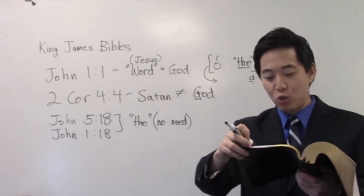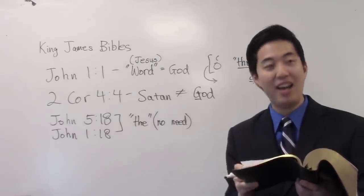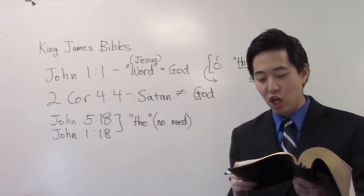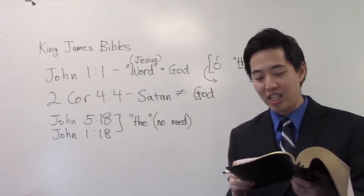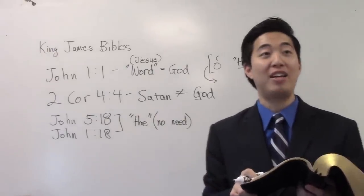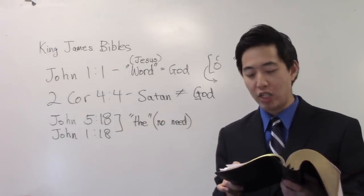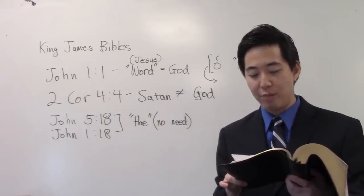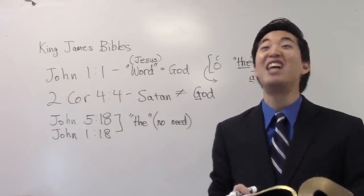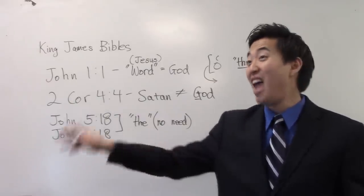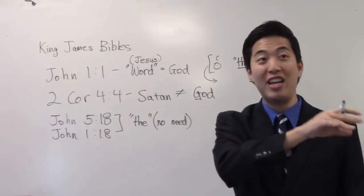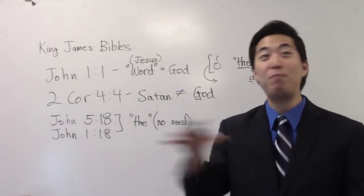In whom the God of this world hath, what? Blinded the minds of them which believe not. This God is contrasted with, lest the light. So, this God of this world is blindness, darkness, is contrasted with, lest the light of the glorious gospel of Christ, who is the image of who? God. God should shine unto them. That other God is contrasted. So, obviously, the first God is contrasted. That should be plainly obvious.